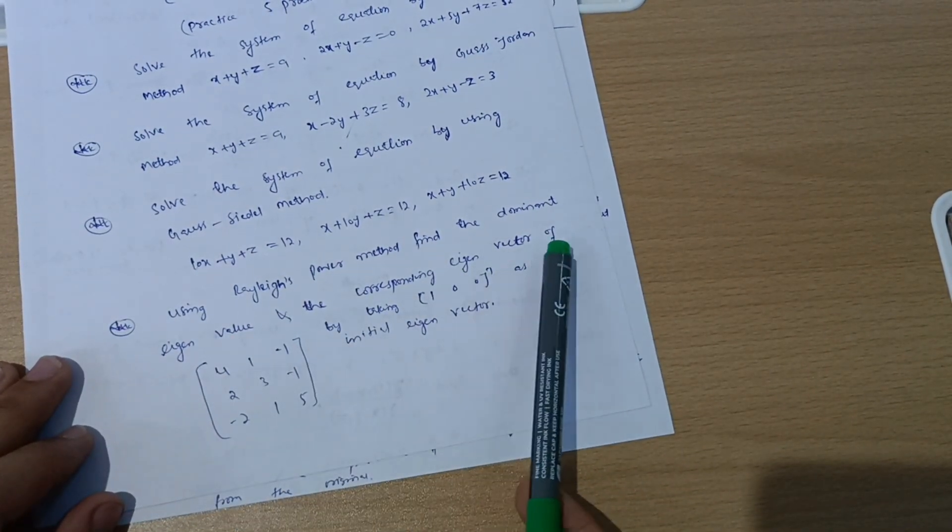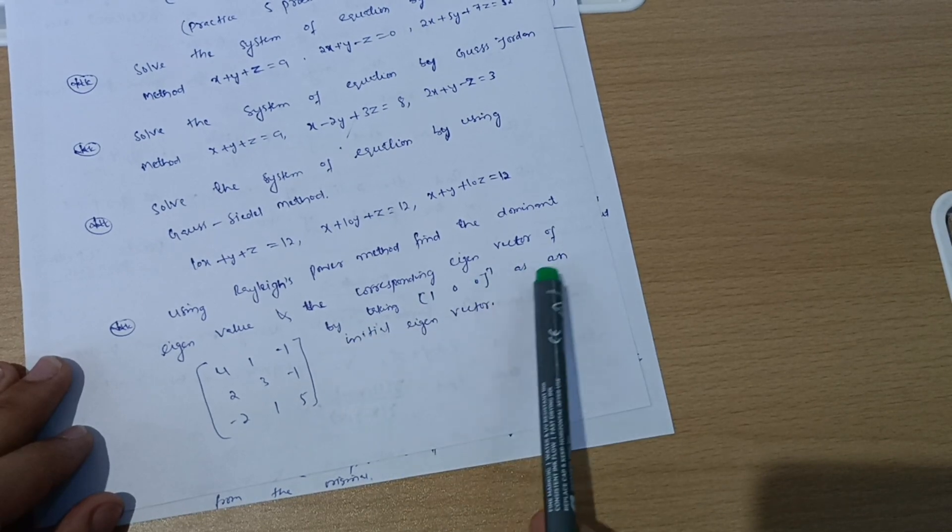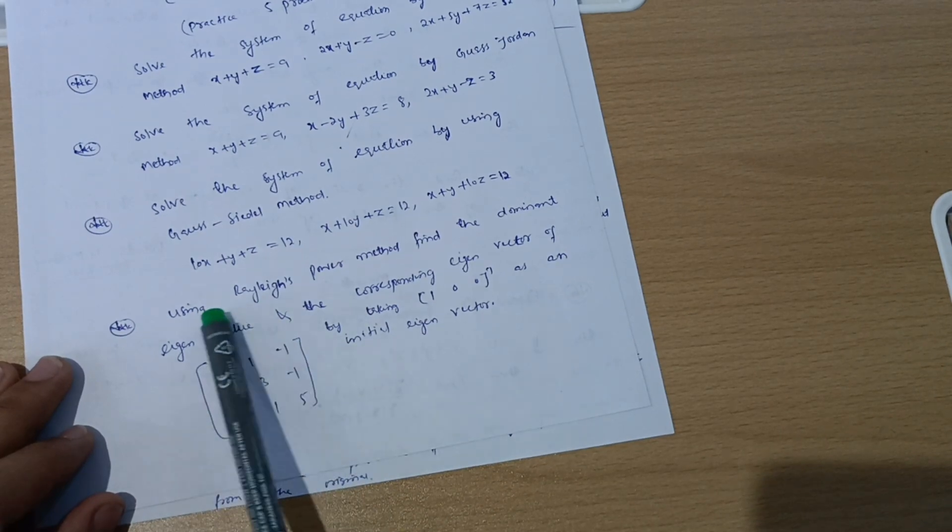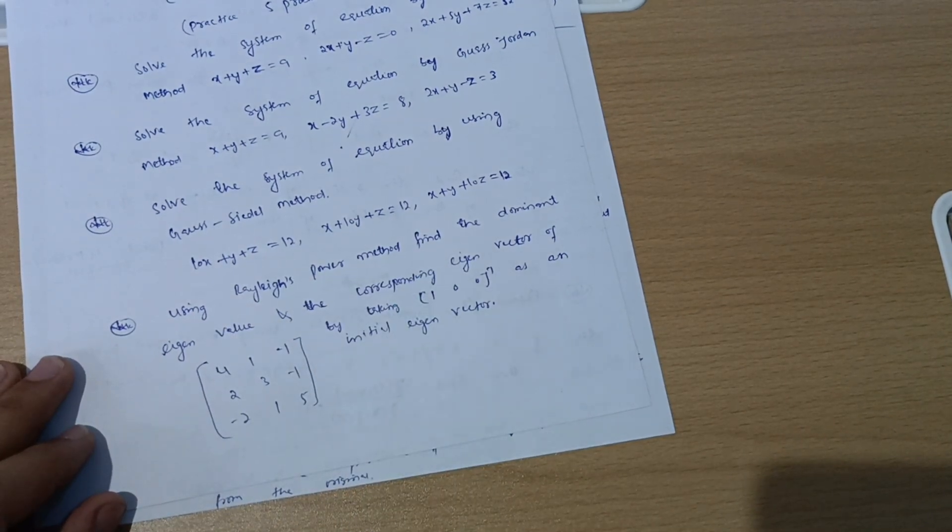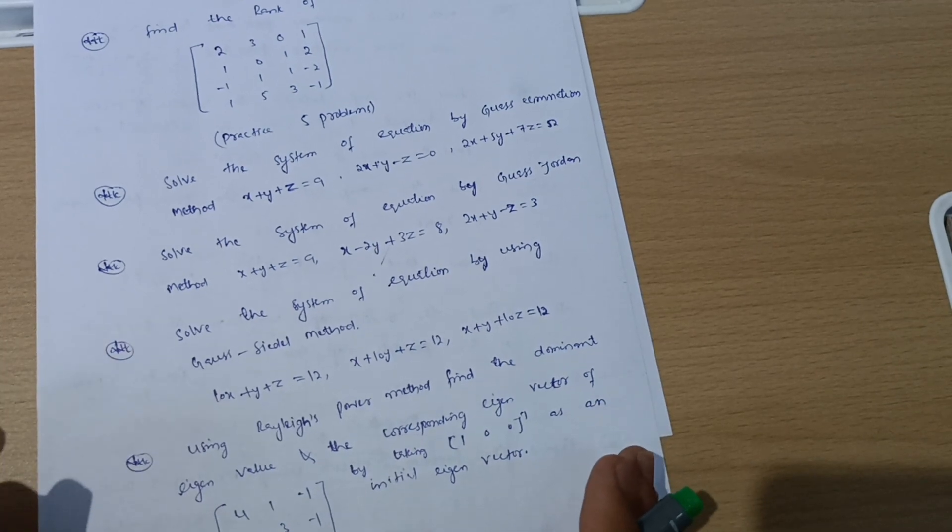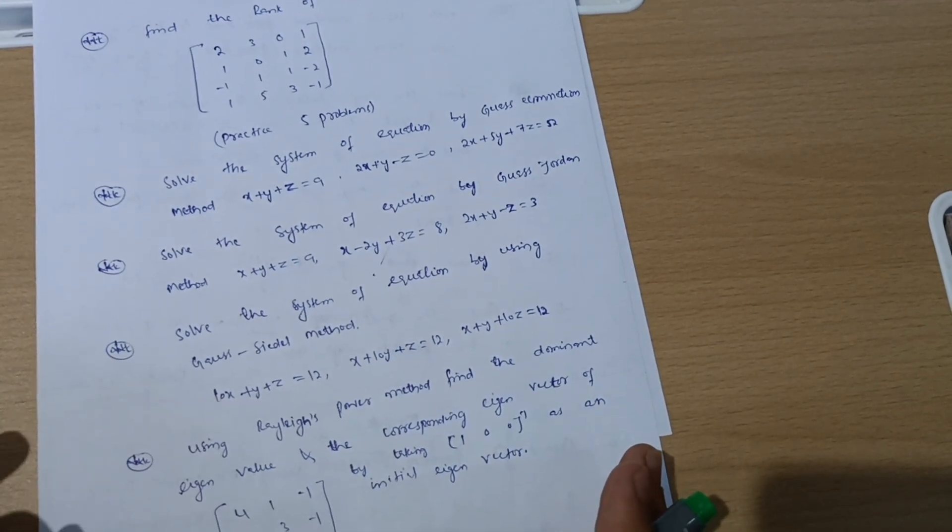One more problem, that is Rayleigh's power method. Find the dominant eigenvalue and the corresponding eigenvector by taking [1, 0, 0] transpose as an initial eigenvector. This will be the matrix given. You have to use Rayleigh's power method to find eigenvalue and eigenvectors. So this module is a super passing module. You have to compulsorily get 20 marks from this module. Make sure your answer should be correct in this particular module, otherwise you will lose marks.